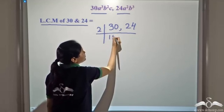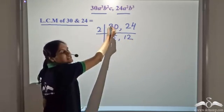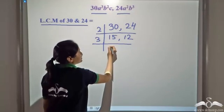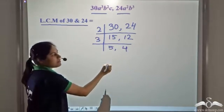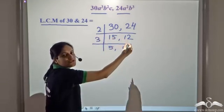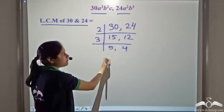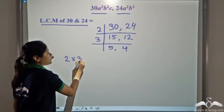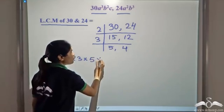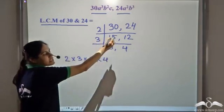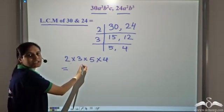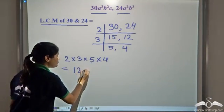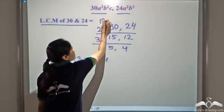Factorizing: 30 = 2 × 15 and 24 = 2 × 12. Then 3 is a common factor, giving 5 and 4 remaining. So 2 × 3 × 5 × 4 gives the LCM of 30 and 24. This equals 2 × 3 = 6, then 6 × 5 = 30, then 30 × 4 = 120. So the LCM of 30 and 24 is 120.